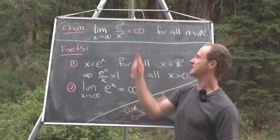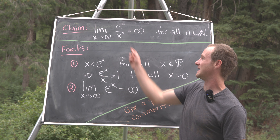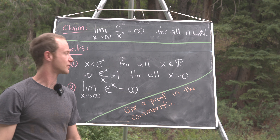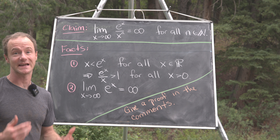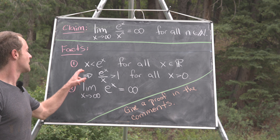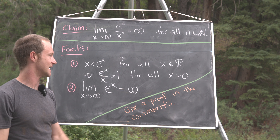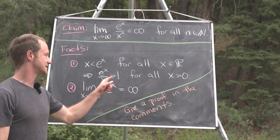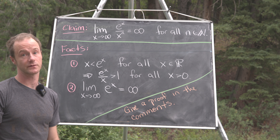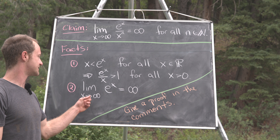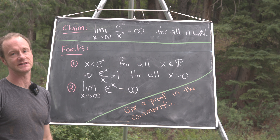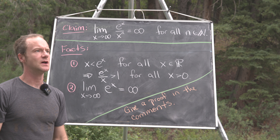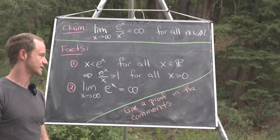In other words, this exponential function is always dominating any sort of polynomial function. We're going to use a couple of facts without proof — you can give a proof or a sketch of a proof in the comments. The first is that x is less than e to the x for all real numbers x, which implies that e to the x over x is bigger than 1 for all positive real numbers. Finally, we'll use the fact that the limit as x goes to infinity of e to the x equals infinity, which follows from the first fact using a comparison test with limits.